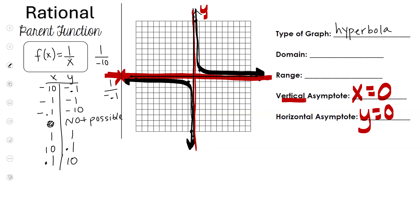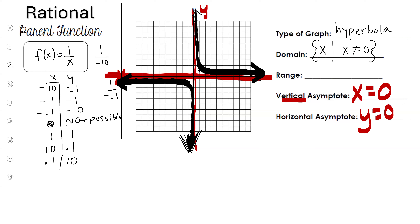Let's talk about domain and range. The x values go forever to the left but stop at the asymptote, then begin again on the other side and go forever to the right. X can be any number except zero, so the domain is all x such that x is not zero. For range, the graph goes from negative infinity up to the asymptote and from the asymptote up to infinity — y cannot be zero, so the range is all y such that y is not zero.